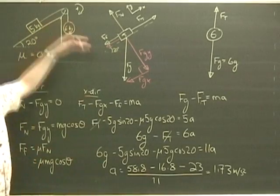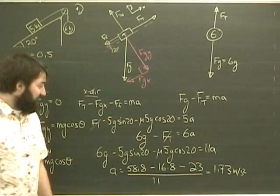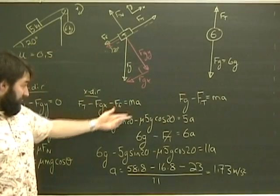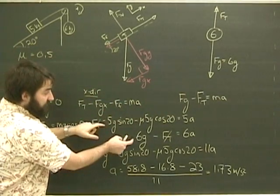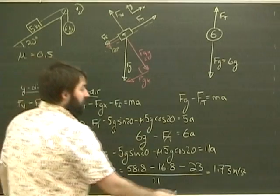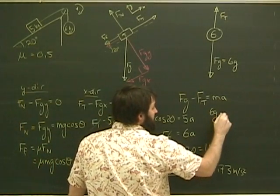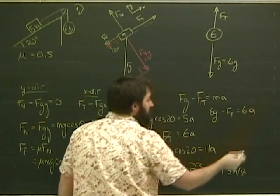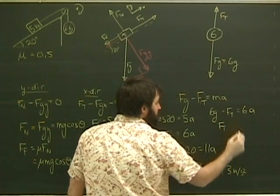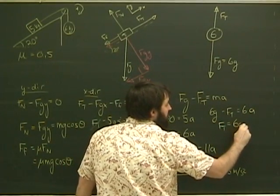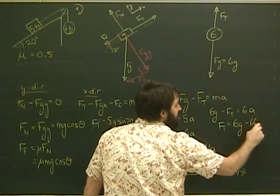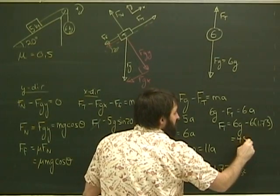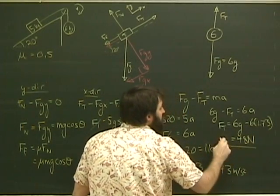The only thing I have left to do is find out what the tension is. I've got just enough room to do it. I'm going to use this expression because it's a little simpler than this equation, but of course I could use either of them. So I'll put it into here, and we've got 6g minus Ft equals 6A, but now I know A. Tension equals 6g minus 6 times 1.73, which works out to be 48 newtons.